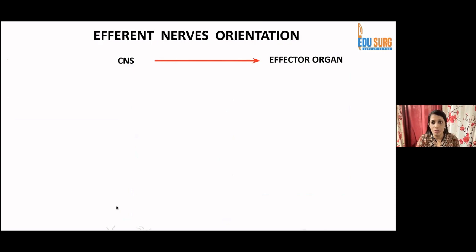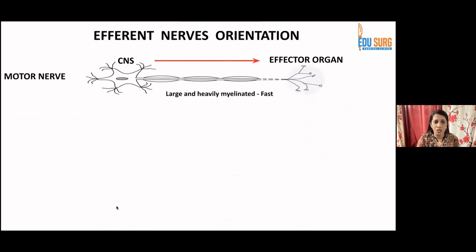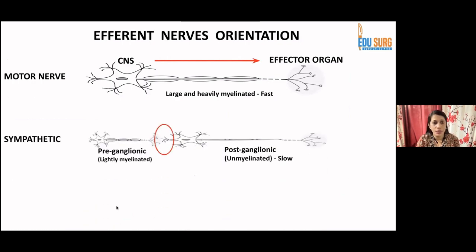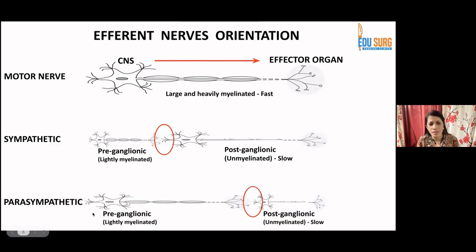Now let's see the efferent nerve orientation. As seen previously, the motor nerve goes from the CNS to the effector organ. These are myelinated nerves — type A nerves — large and heavily myelinated, enabling fast conduction via saltatory conduction. The sympathetic system has pre-ganglionic fibers that are lightly myelinated with short segments, and post-ganglionic fibers that are longer and unmyelinated, causing slow conduction. The parasympathetic system has long lightly myelinated pre-ganglionic fibers and shorter post-ganglionic fibers, with two ganglia present.